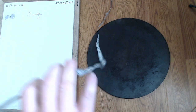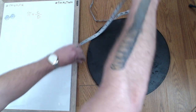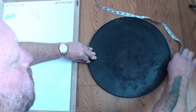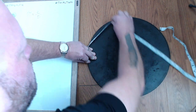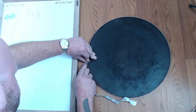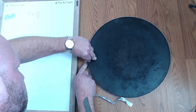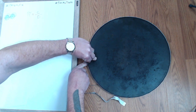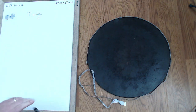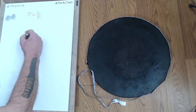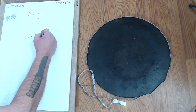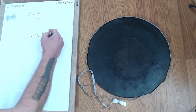First let's do the circumference of our pizza stone. We'll just wrap that around. That looks like about — I'll say 46.8 inches. Let's mark that down: C equals 46.8 inches.